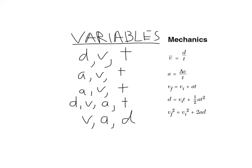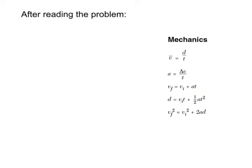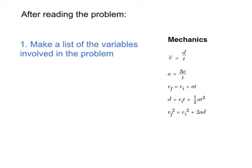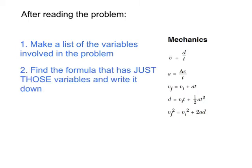Now let's talk about a strategy for selecting the right formula. After reading the problem, make a list of the variables involved — identify whether it's distance, velocity, time, or acceleration. Next, find the formula that has just those variables and write it down. This is where you use the lookup table we just made on your reference tables.